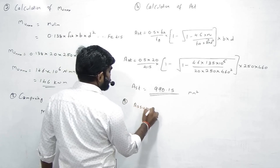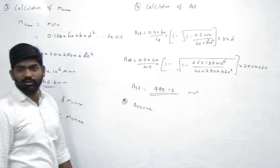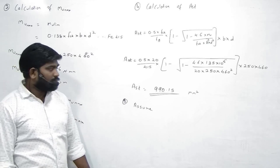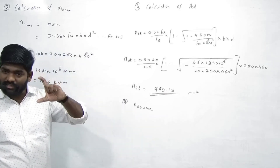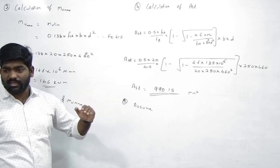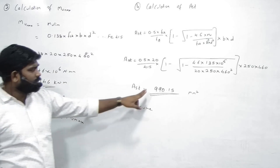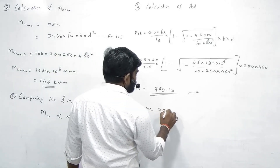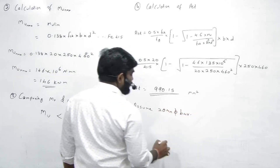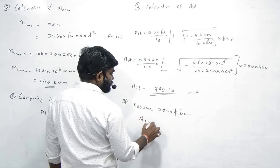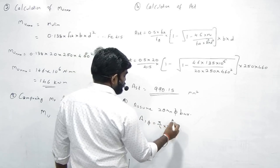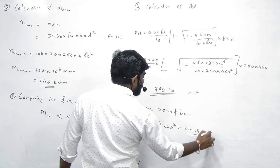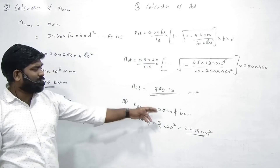Assume karo — 20 mm diameter bar assume karte hain. Agar 20 mm dia bar assume kiya toh area of one bar = 314.15 mm². Yaad ho jaana chahiye — 20 ka itna hi aata hai. 314.15 fix hai.